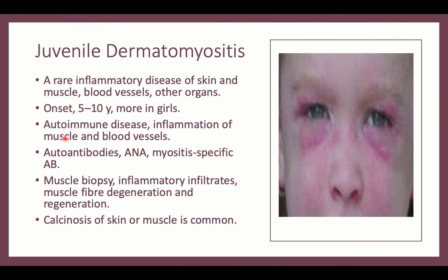Continuing with juvenile rheumatological conditions, we have juvenile dermatomyositis. It is rare, and it is an inflammatory disease combining skin and muscle manifestations, also associated with vasculitis. It presents with systemic manifestations common to all rheumatological diseases. This is a disease predominantly of girls, usually between 5 and 10 years of age, with immune conditions that attack muscles and blood vessels.